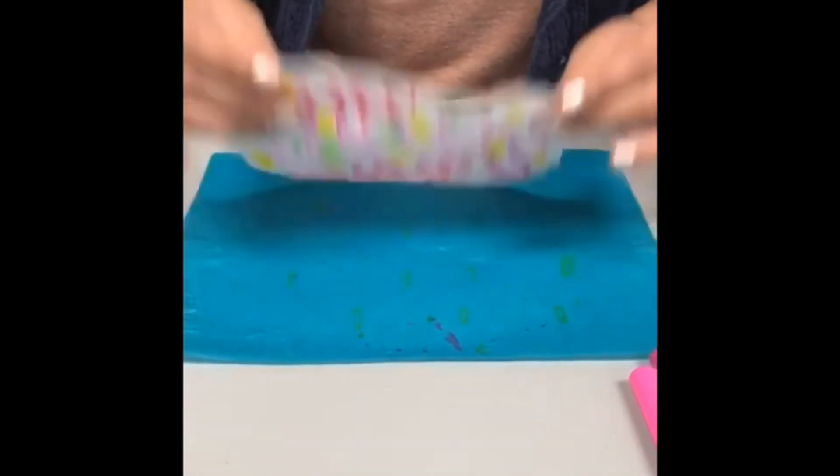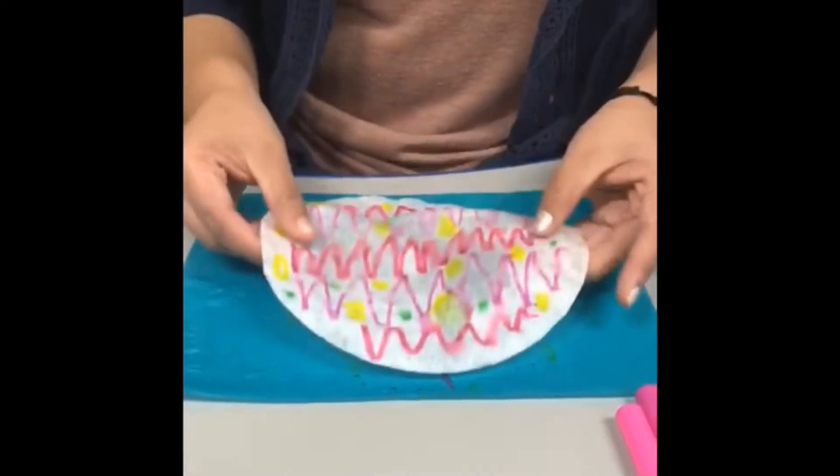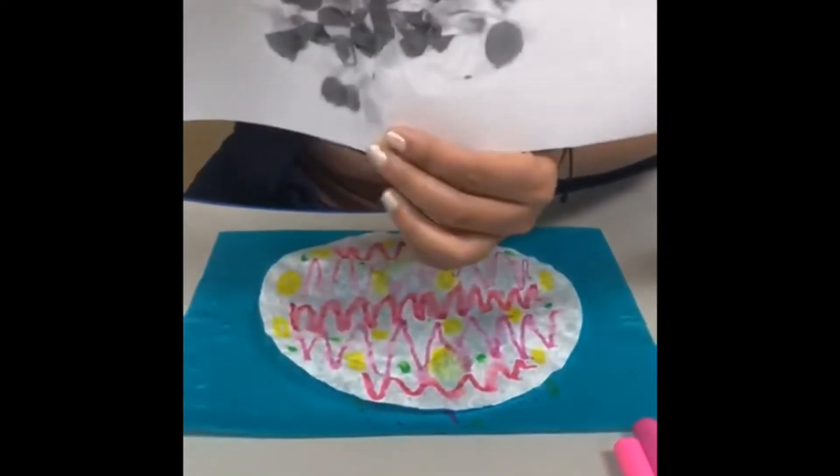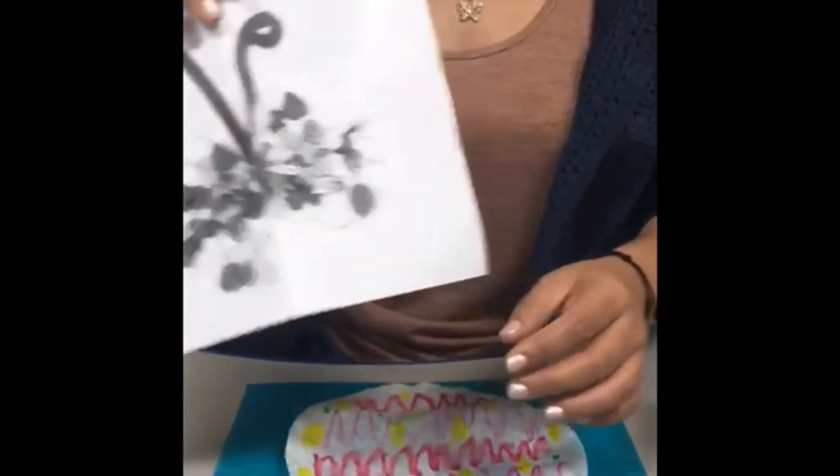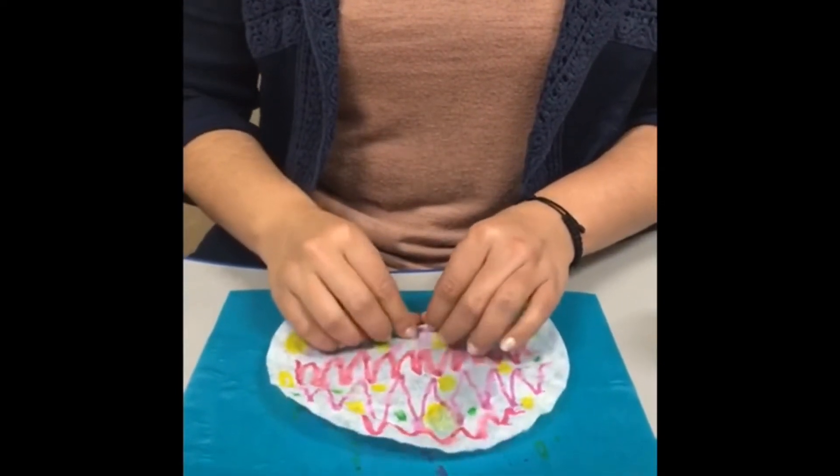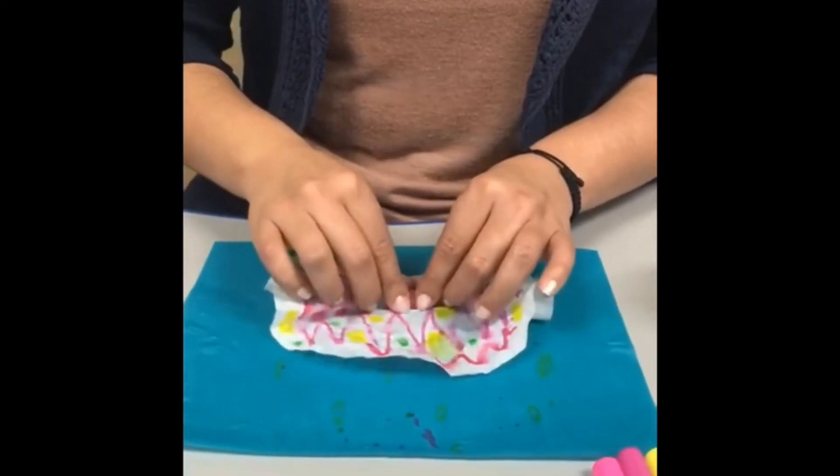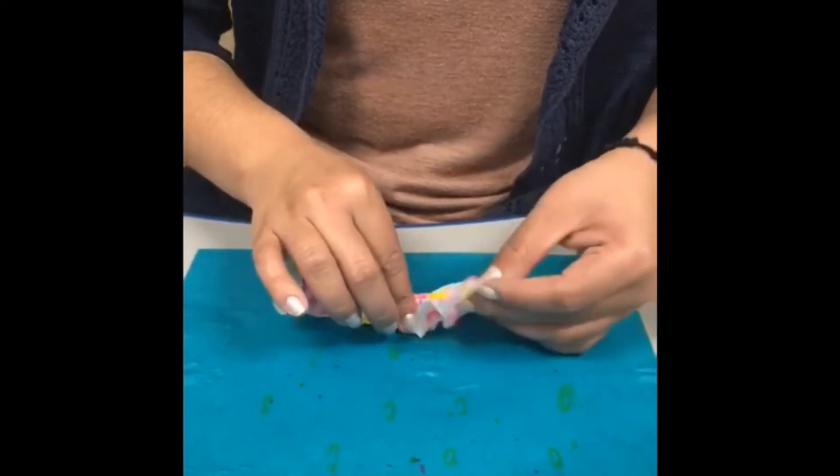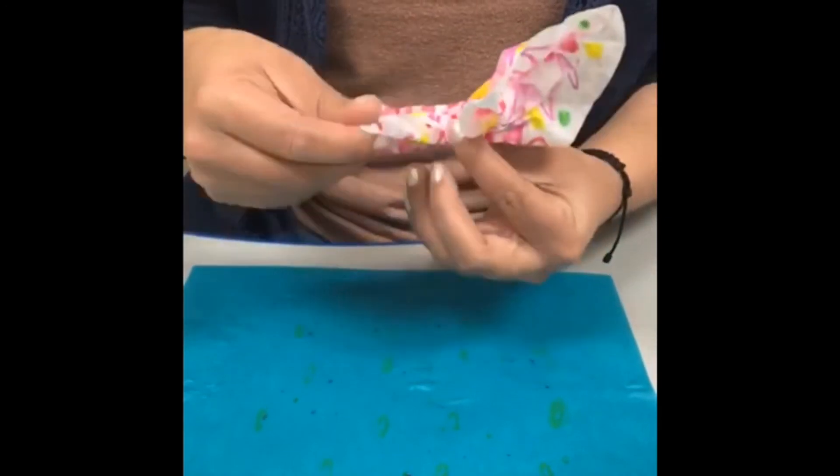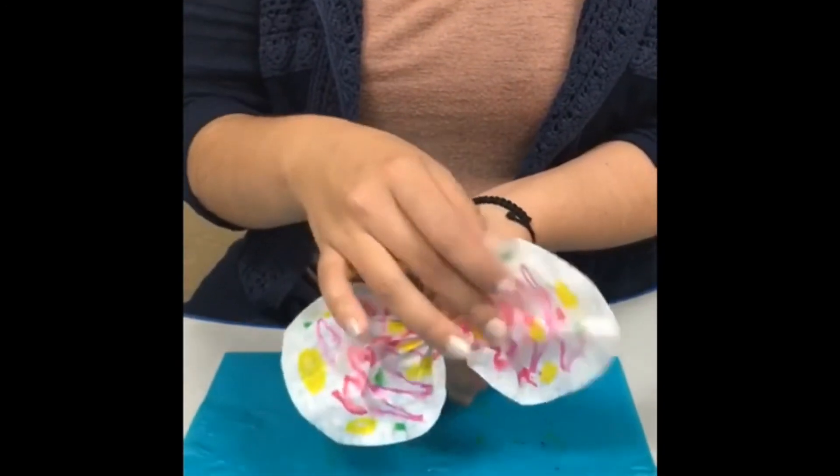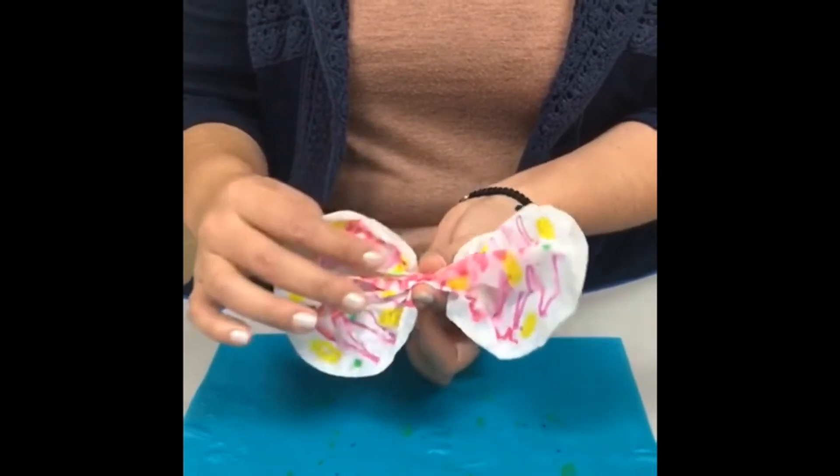Okay. So now that your coffee filter is a little more dry, you are going to squeeze it because you're going to make a butterfly. So this is kind of what it's going to look like. So you're going to start pinching. Just start pinching. Start pinching right at the middle. Okay. So I just pinched at the middle. And see how it looks like you have two little wings? Okay. So now we need to make sure our wings are together.